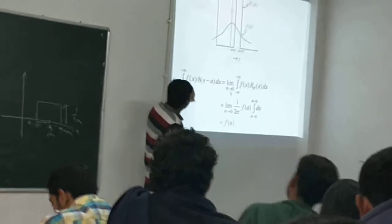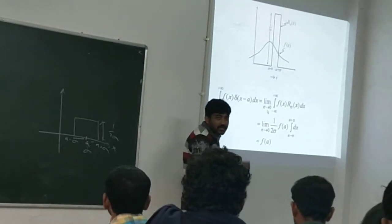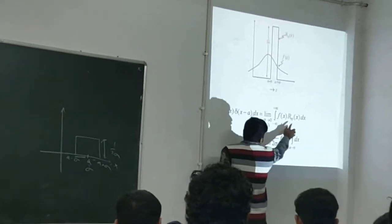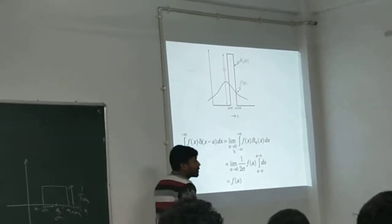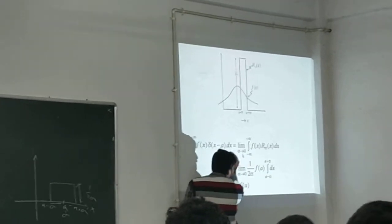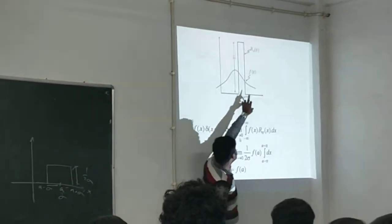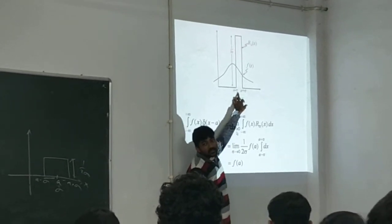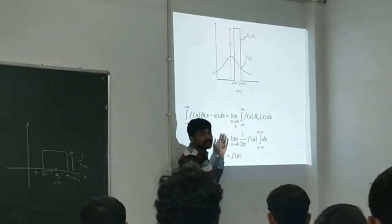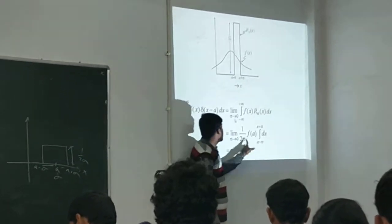Because outside that interval the function is 0. So I start with the integral from minus infinity to plus infinity of f of X times delta of X minus A dx. As sigma goes to 0, the interval A minus sigma to A plus sigma shrinks. And in that interval, the variation of f of X will be small, so we can take f of X outside the integration. So the integration simplifies to f of A times the integral from A minus sigma to A plus sigma of dx, which equals 2 sigma. The 2 sigma cancels out and we get f of A. This is the sifting property of the delta function.